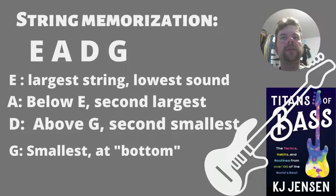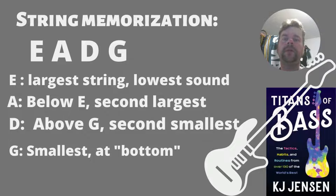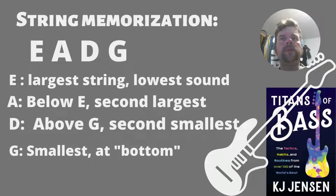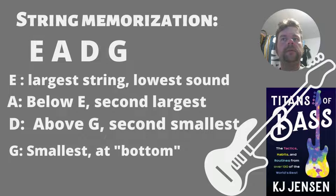So if you look at the strings of a bass, and if you're right-handed like most of you will be, the top string when you're holding it on your lap would be the E string — the largest string with the lowest sound. Below it is A, D, and G. The G would be on the bottom when you're holding it on your lap, and it is the smallest or thinnest string.